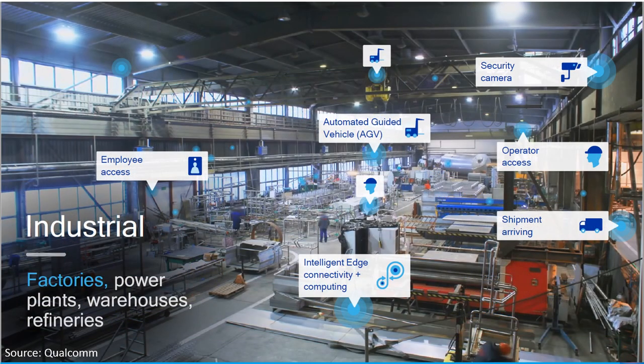Let's look at why we may need private networks. Qualcomm has some fantastic examples. We are not just talking about people accessing the internet — it's about people, machines, and devices connected to the internal network to process orders, report issues, security access, etc. The first is an industrial example like factories, power plants, warehouses, and refineries. Factories very often have a lot of metal on the roof and walls, making them like Faraday cages with no outside-in coverage. Many different players need access to information: employees, automated guided vehicles, security cameras, machines, robots, operators, etc.